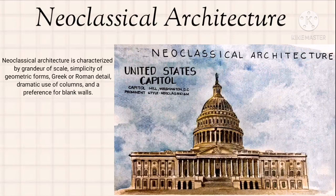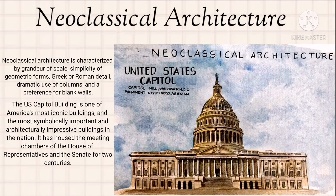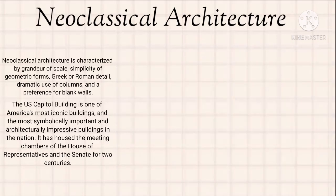Neoclassical architecture is characterized by grandeur of scale, simplicity of geometric forms, Greek or Roman detail, dramatic use of columns, and a preference for blank walls. The United States Capitol on Capitol Hill, Washington D.C. is one of America's most iconic buildings and the most symbolically important and architecturally impressive buildings in the nation. It has housed the meeting chambers of the House of Representatives and the Senate for two centuries.